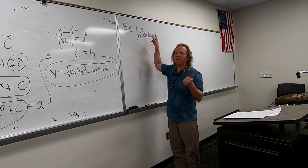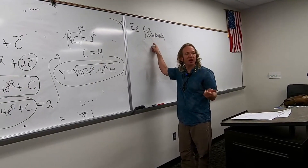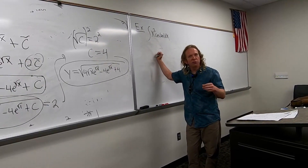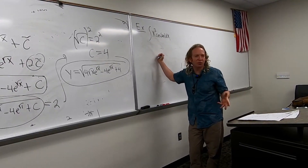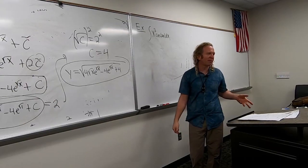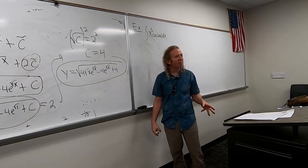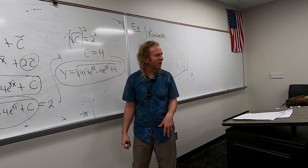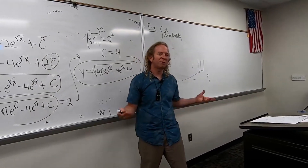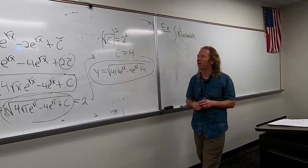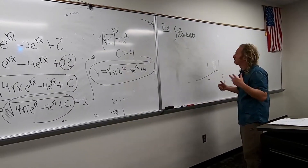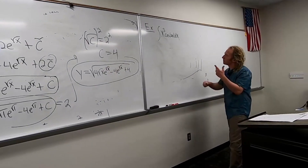Whenever it's x to a power times cosine, sine, or e, those are the most common situations where you use tabular. You can probably use it in other situations, but it just doesn't come up that much to make much of a difference.